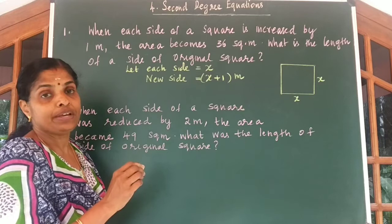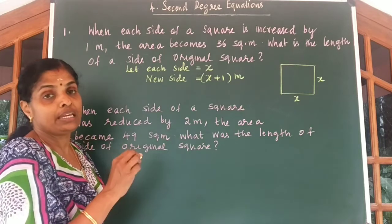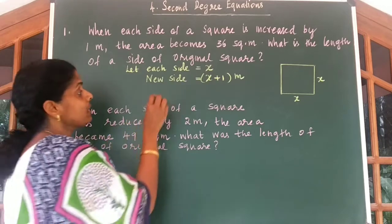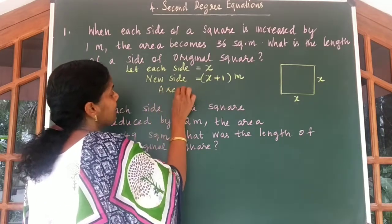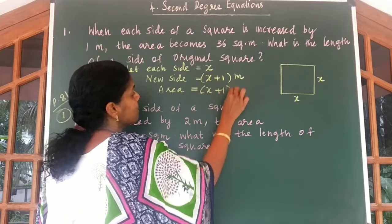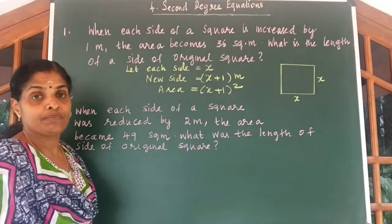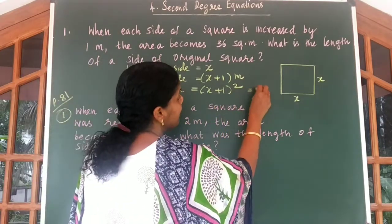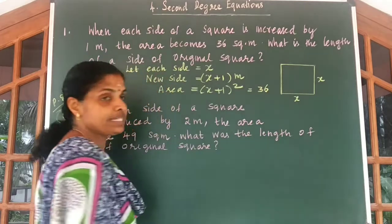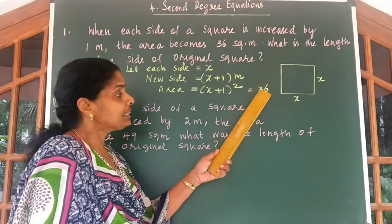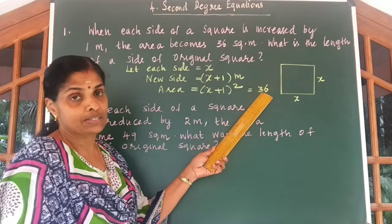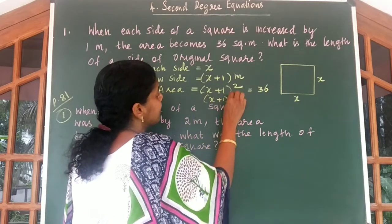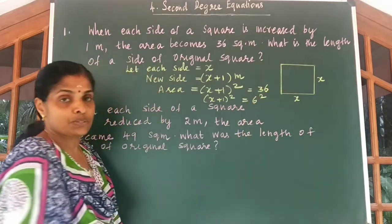What is the area of a square? We know area is equal to side into side, or side squared. So we can write area is equal to (X plus 1) the whole square. We are given (X plus 1) squared is equal to 36. Now we know 36 is the square of 6, so we can say (X plus 1) squared is equal to 6 squared.